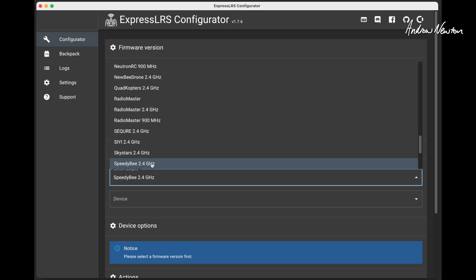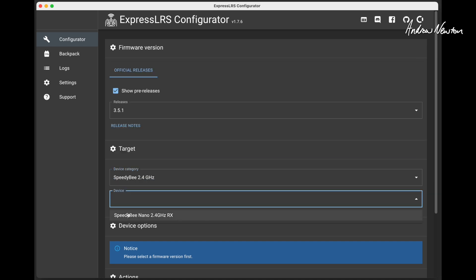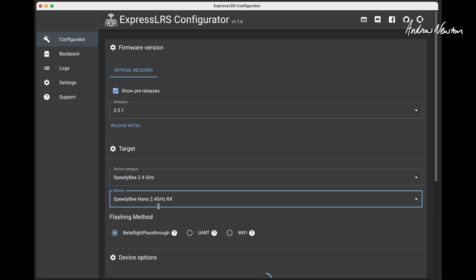So device category, we can see 2.4 gigahertz is there. And the only thing there is the SpeedyBee Nano 2.4 gigahertz receiver. Now it comes with 3.4.3 ExpressLRS. There is a later version, this 3.5.1.